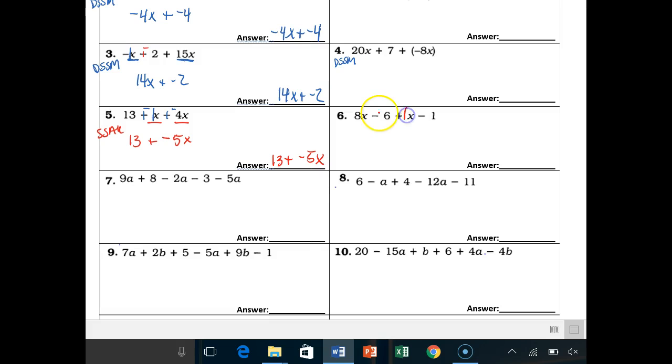Again, you're going to want to put a coefficient of 1 there. Change that to plus negative. Change that to plus negative. And then go to work.